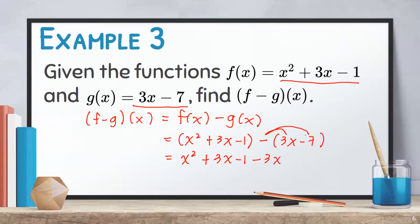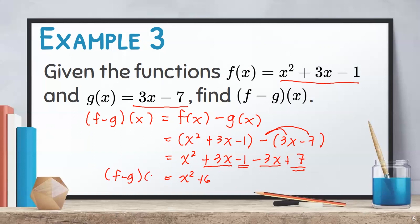And negative times negative is positive, so that becomes positive 7. From here, we can combine positive 3x and negative 3x, and also negative 1 and positive 7. Since x squared has no similar terms, we simply copy it. Positive 3x minus 3x equals 0, so there is no need to write it. Negative 1 plus 7 equals positive 6. Therefore, f minus g of x equals x squared plus 6.